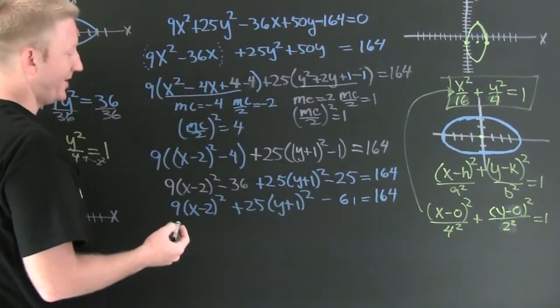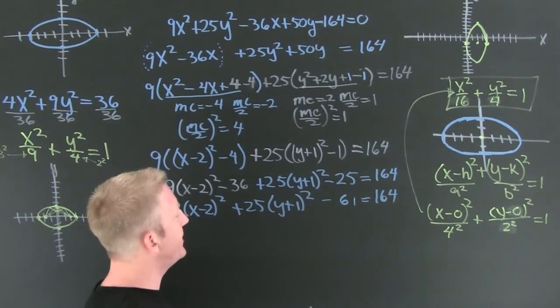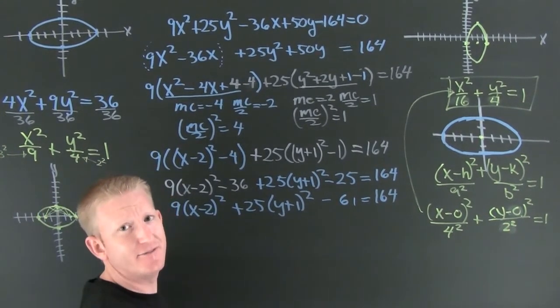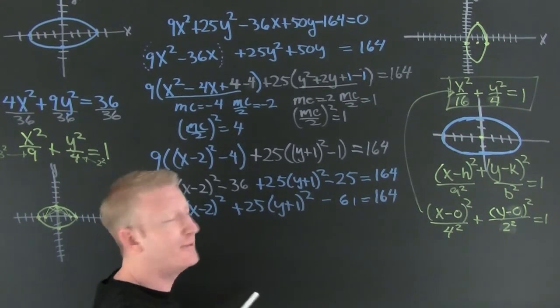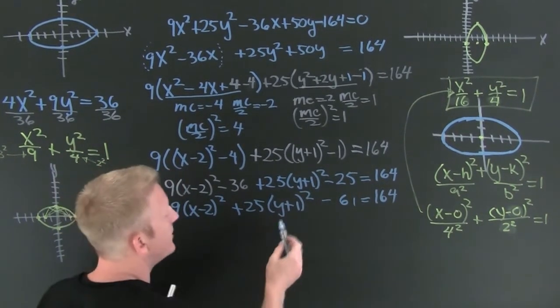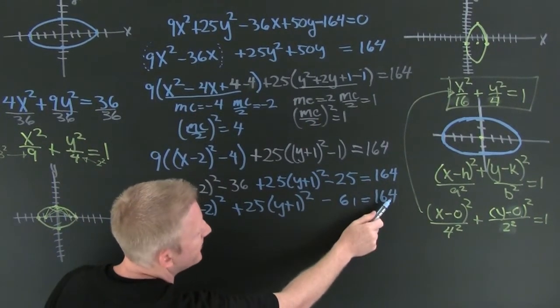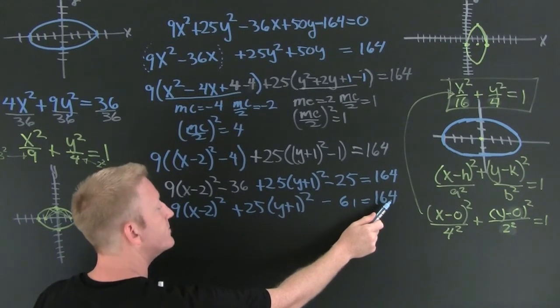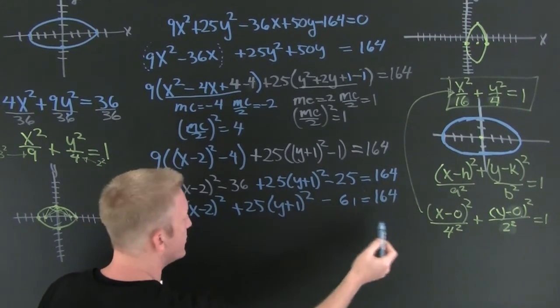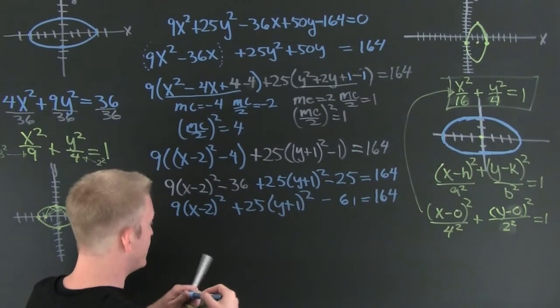I'm down on my knees looking for the answers. That was going too far, wasn't it? I put that over there. That's 225. Then I gotta divide everything by 225.